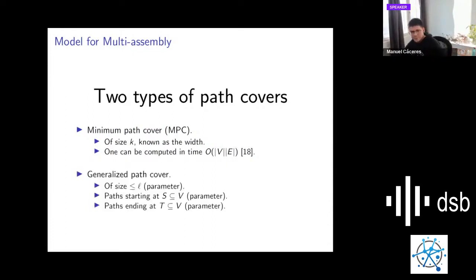For considering more practical constraints, we consider a generalized version of path covers that is a path cover whose size is at most a parameter L. We also restrict the paths to start and end at a given input subset of vertices of the graph. This is a generalization of minimum path cover, because we could set L equals k, and S and T equals to the whole set of vertices.